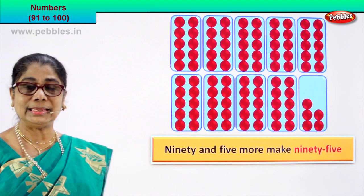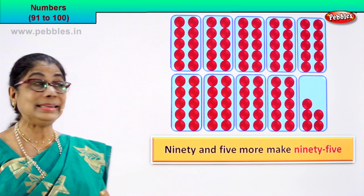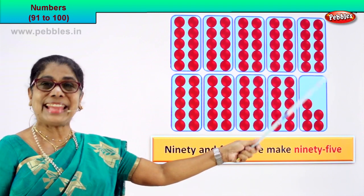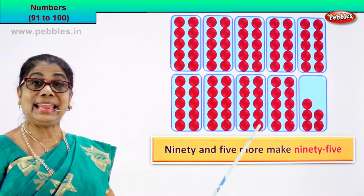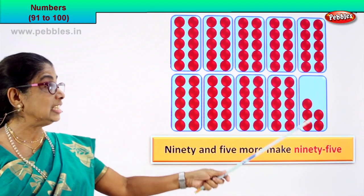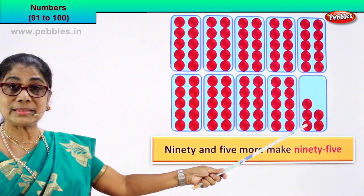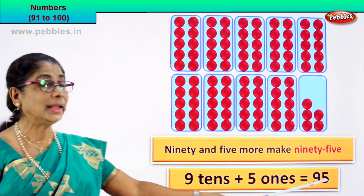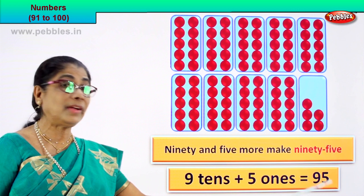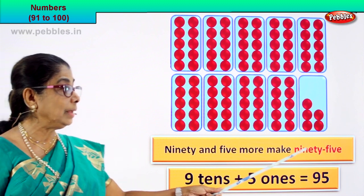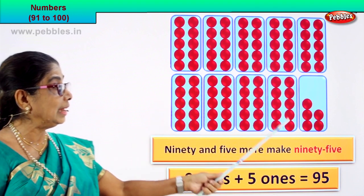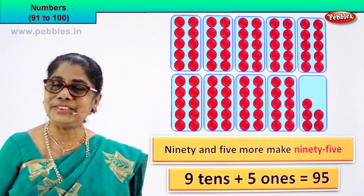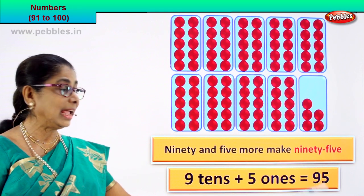What is 90? 90 is nine tens. One ten, two tens, three tens, four tens, five tens, six tens, seven tens, eight tens, nine tens — plus five ones. Nine tens plus five ones equal to 95. The numeral is 95 and the number name is 95.